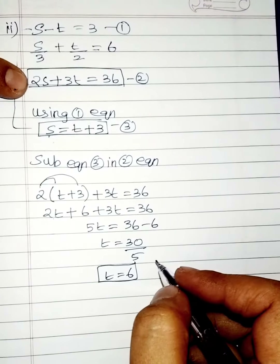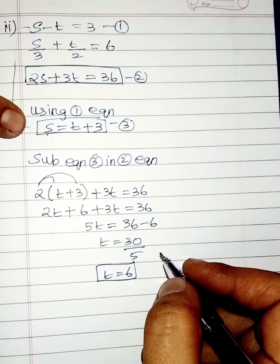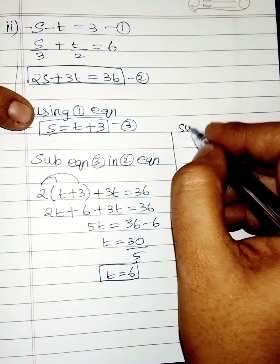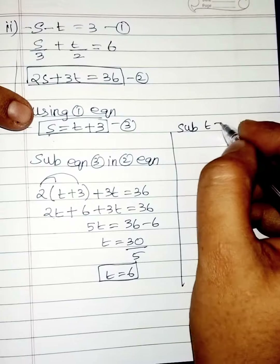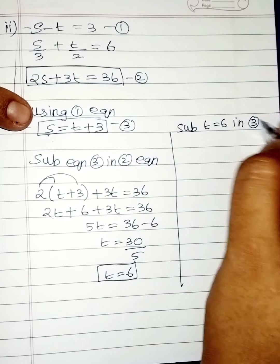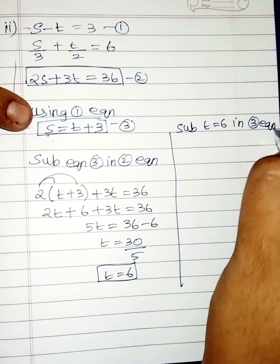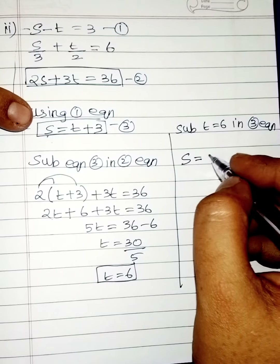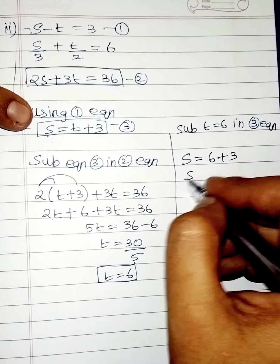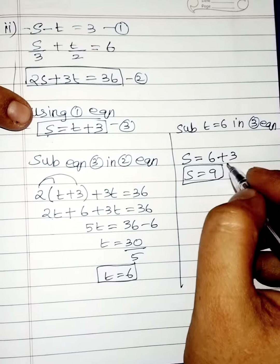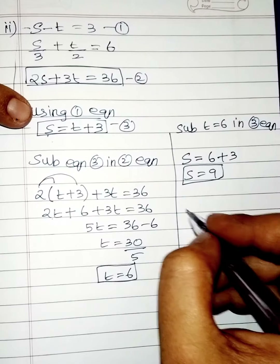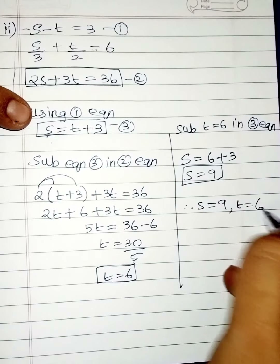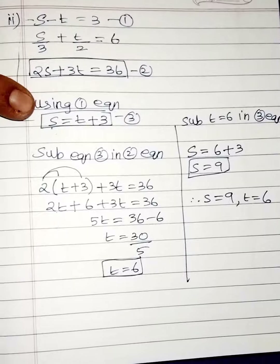Substitute t equals 6 into the third equation: s equals t plus 3, so s equals 6 plus 3 equals 9. Therefore s equals 9 and t equals 6 is the final answer for the second subdivision.